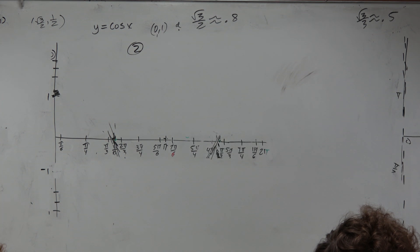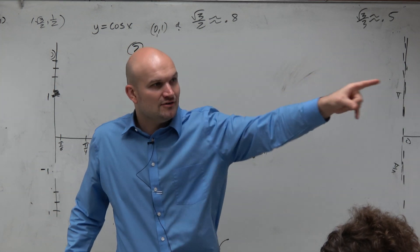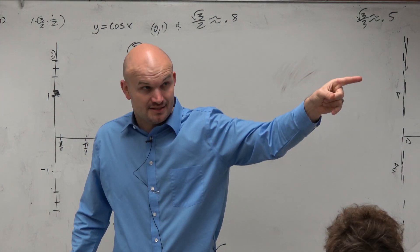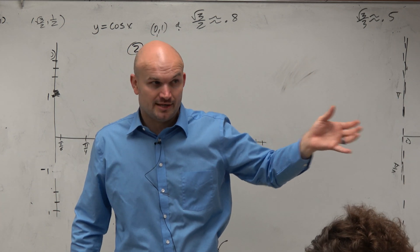However, what I do want to talk to you guys about is how can we understand why that is the graph? How does that graph make sense? Or how are we sure that that graph is what secant looks like?